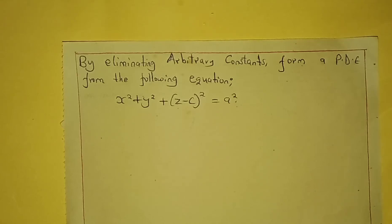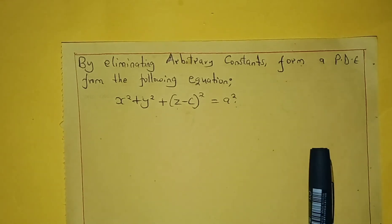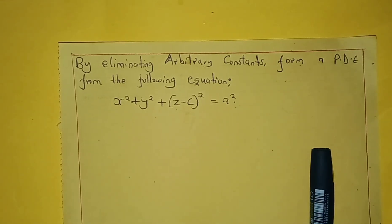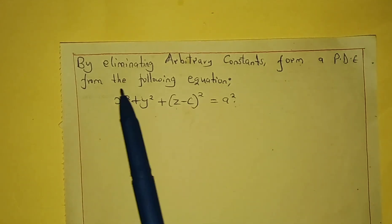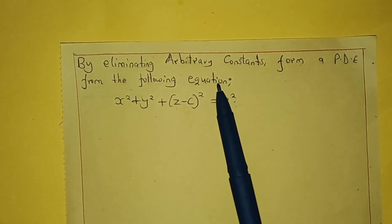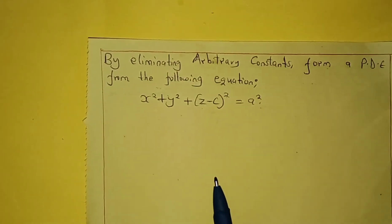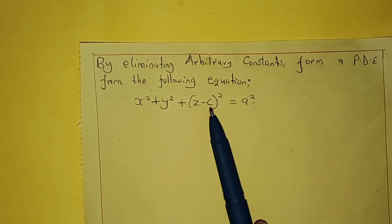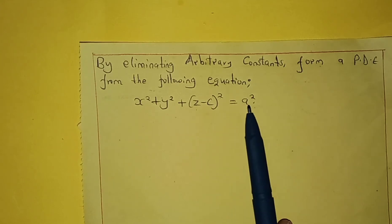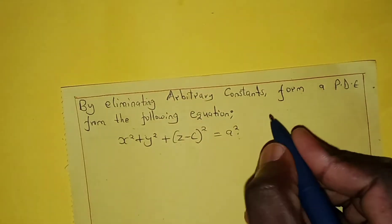Hello viewers, in this video we are going to learn how to form a partial differential equation by eliminating arbitrary constants. Form a partial differential equation from the following equation. This equation has constants c, z, and a, so we call it equation one.